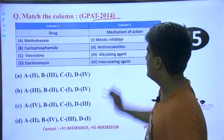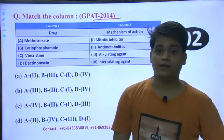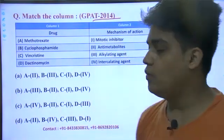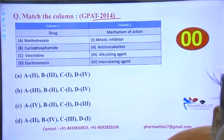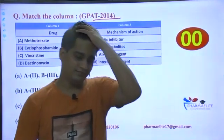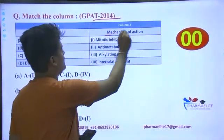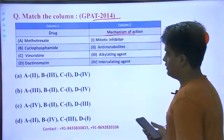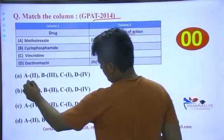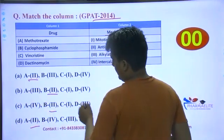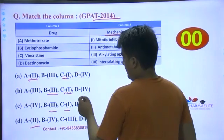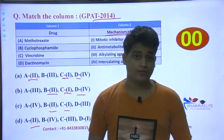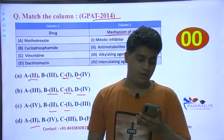This is a previous year GPAT 2014 question, and it is of the same type — belonging to the category of master columns. As we approach master columns, first of all I am going to check the different options: A has 2-2 repeating, B has 2-2 repeating, C has 1-1-1-1 repeating, and D has 4-4 repeating. That way of elimination is what we discussed in sure-type questions parts one, two, and three.